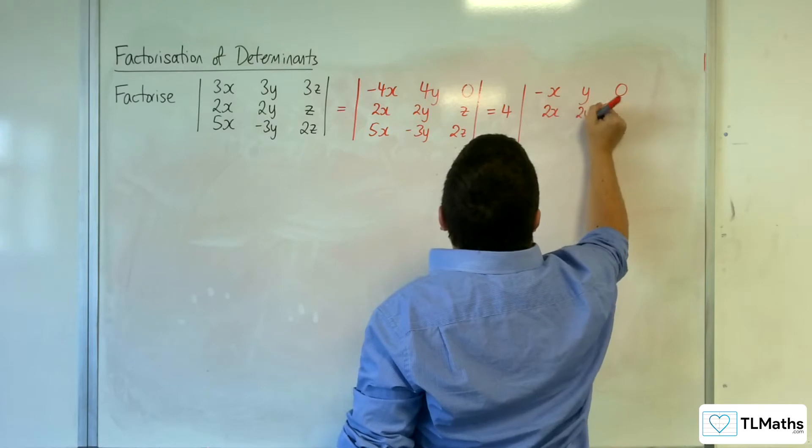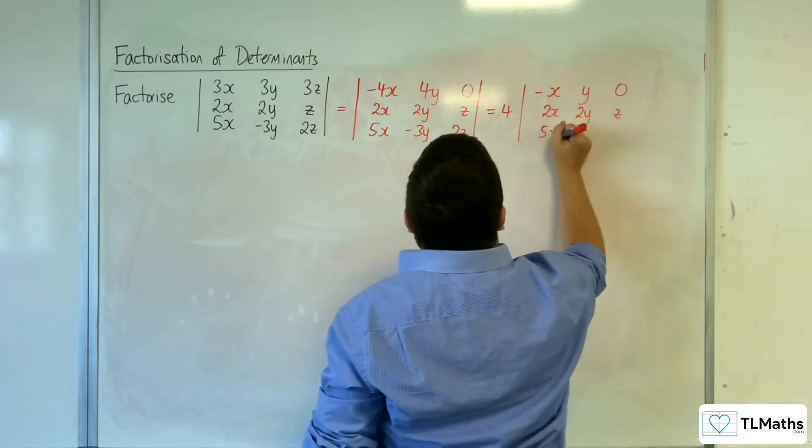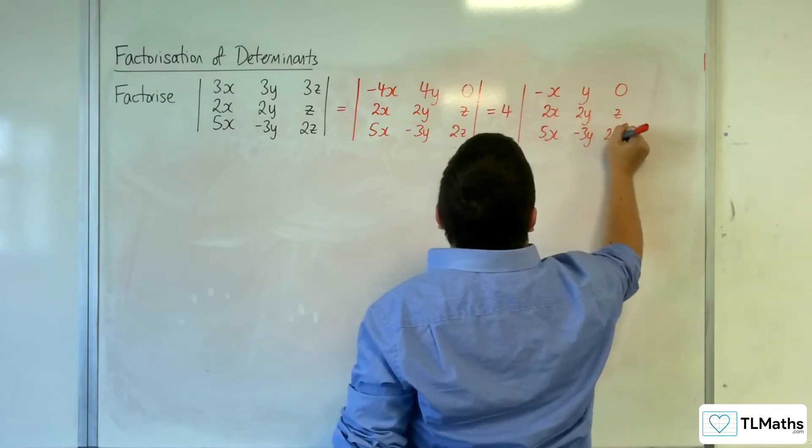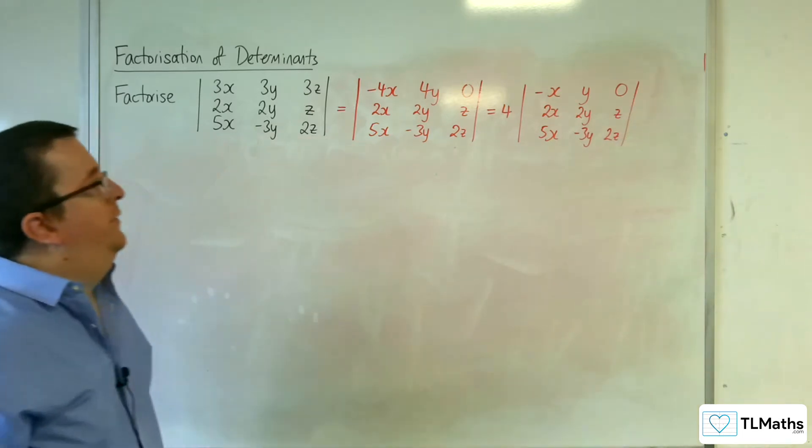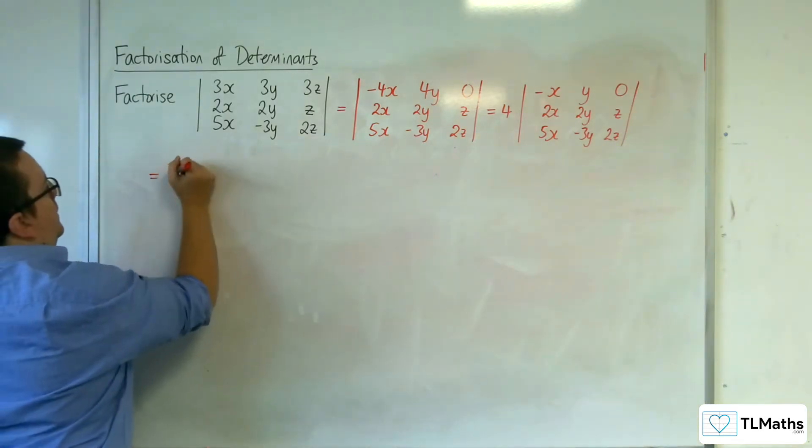2x, 2y, z, 5x minus 3y, 2z. Now the reason why you might do that is just to kind of keep the numbers easier for yourself.